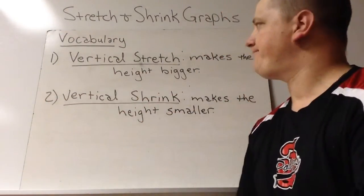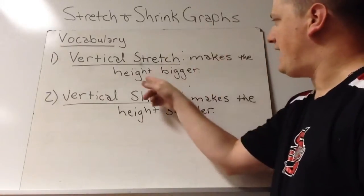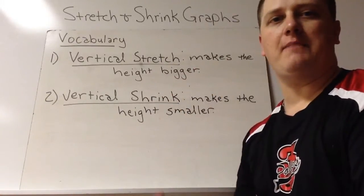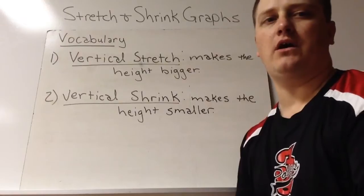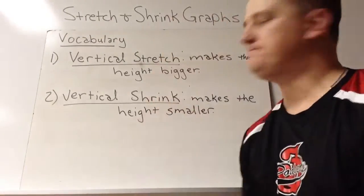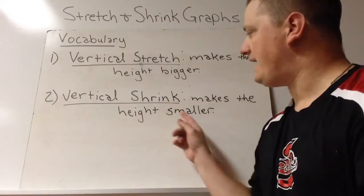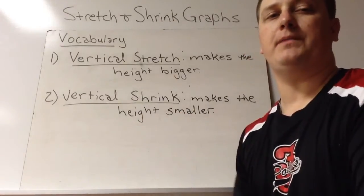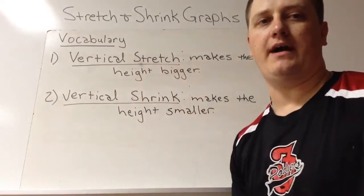Vocabulary. Vertical stretch makes the height bigger. This is a multiplication that will cause everything to grow taller. Vertical shrink makes the height smaller. This would be multiplication that makes our graph smaller.